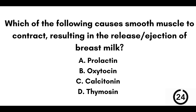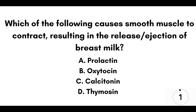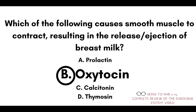Question number twelve: which of the following causes smooth muscle to contract, resulting in release or ejection of breast milk? A) Prolactin. B) Oxytocin. C) Calcitonin. Or D) Thymocin. Our answer here is B, oxytocin.